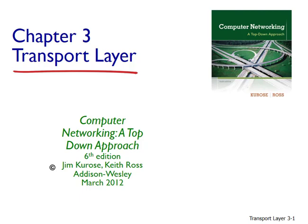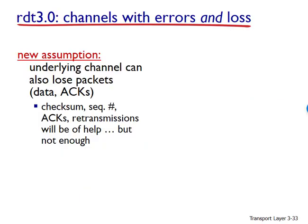In this lesson, we're going to deal with another problem: what if the segments being transferred aren't just corrupted but are lost? Suppose now that in addition to corrupting bits, the underlying channel can lose packets as well, which is not uncommon in today's computer networks. Two additional concerns must now be addressed by the protocol: how to detect packet loss and what to do when packet loss occurs. The techniques already developed in RDT 2.2 — checksumming, sequence numbers, acknowledgements, and retransmissions — will allow us to deal with this problem, though detecting packet loss will require adding a new protocol mechanism.